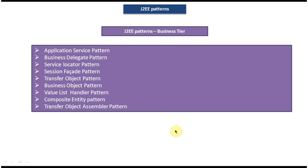In this tutorial I will cover J2EE patterns and what patterns will come under the J2EE patterns. J2EE patterns is divided into three parts: the first one is Presentation Tier, the next one is Business Tier, and the next one is Integration Tier. I have created a separate video for what patterns come under the Presentation Tier of J2EE patterns.